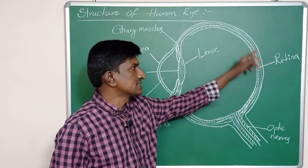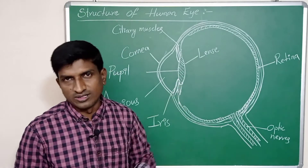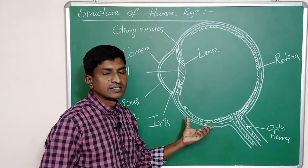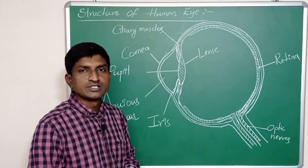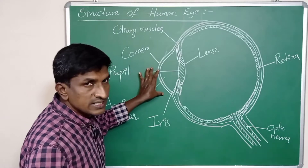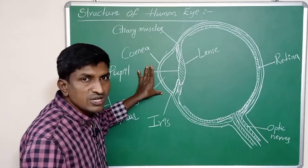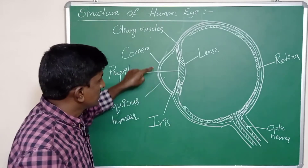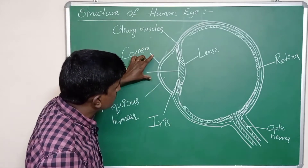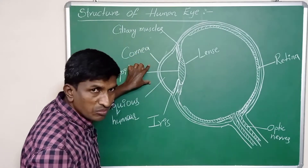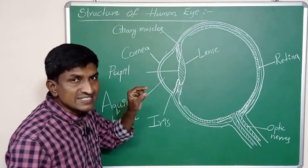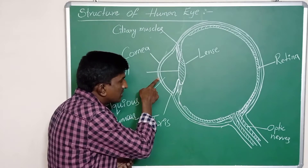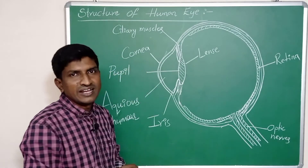Generally this is called the eyeball, and the eyeball is slightly elliptical in shape. This curved part that appears outside — the outer side of the eyeball — is slightly sharpened, and this transparent outer part is called the cornea.